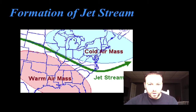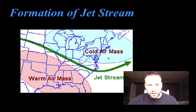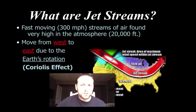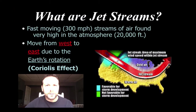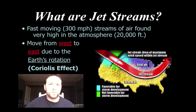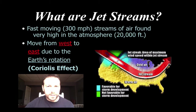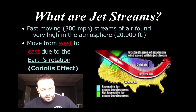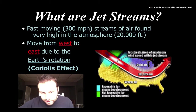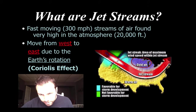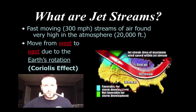Here's the formation of a jet stream. Notice that it is the boundary between two air masses — our big cold air mass right here, and our warm air mass right there. So jet streams are nothing more than these high-altitude, fast-moving winds that go from west to east across the United States with the help of Earth's rotation. The jet stream is going to be the boundary between air masses.